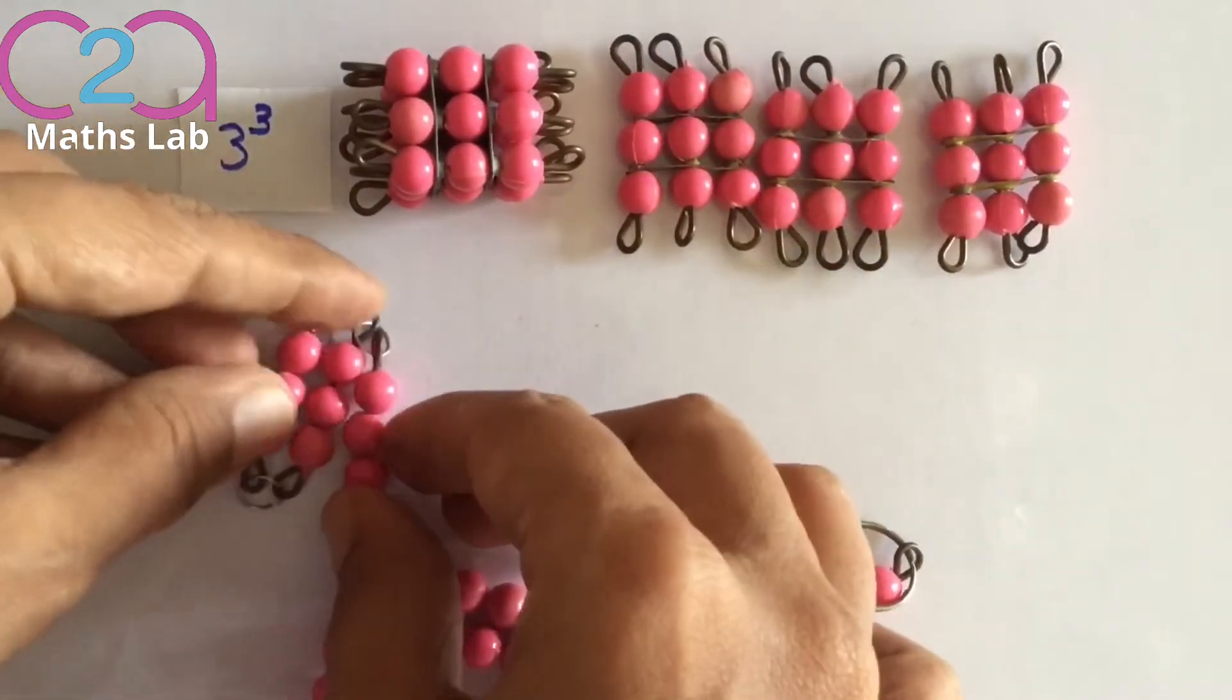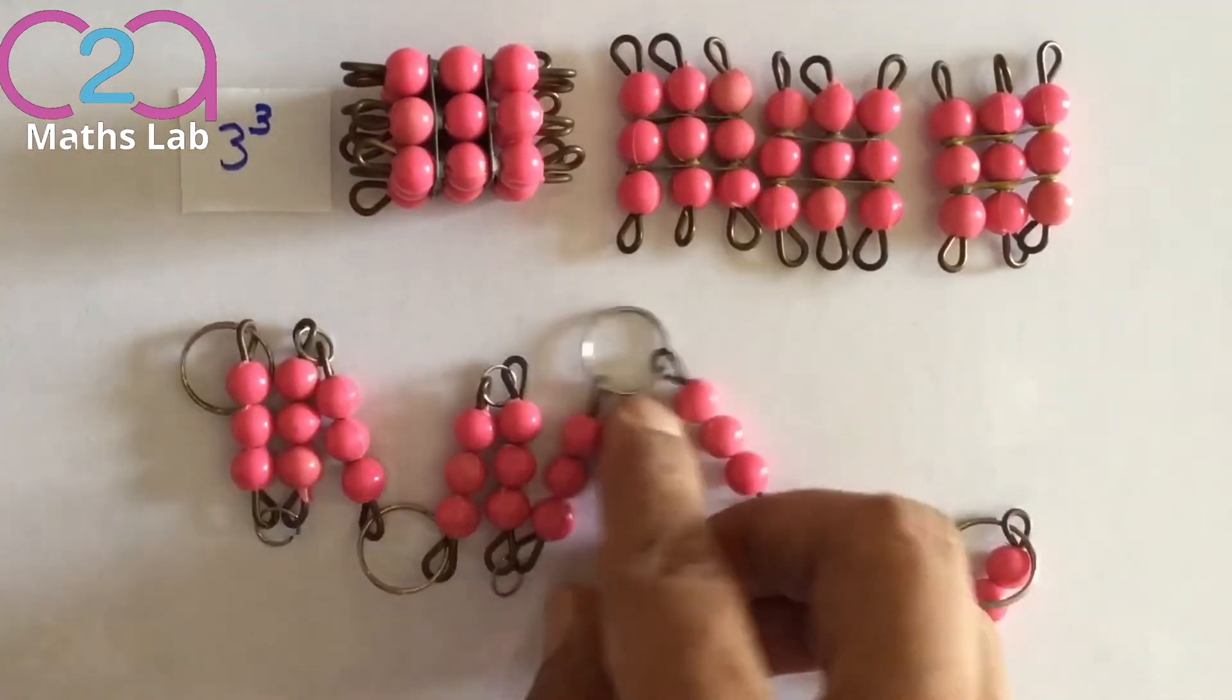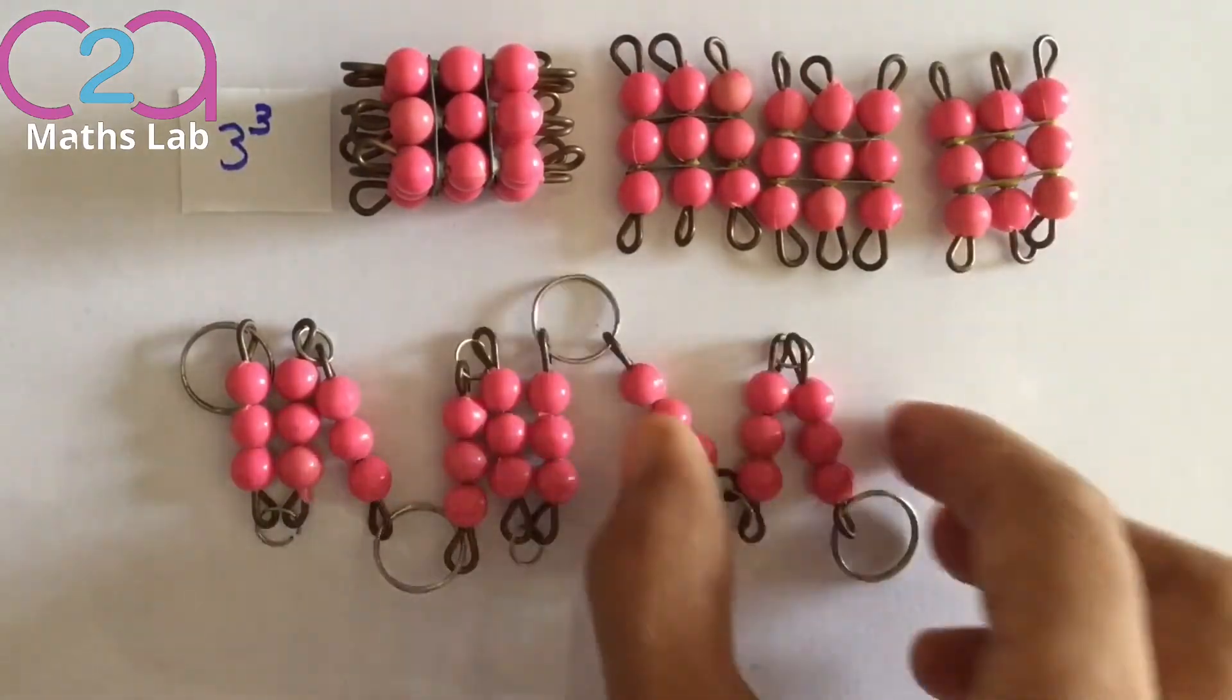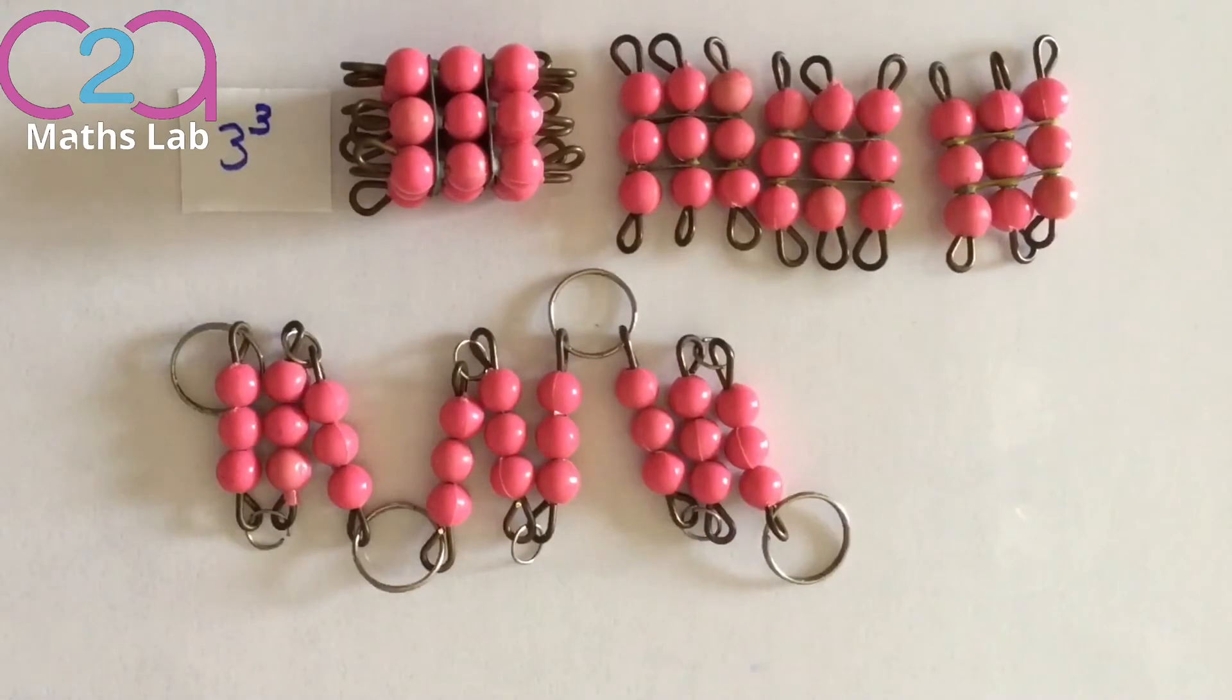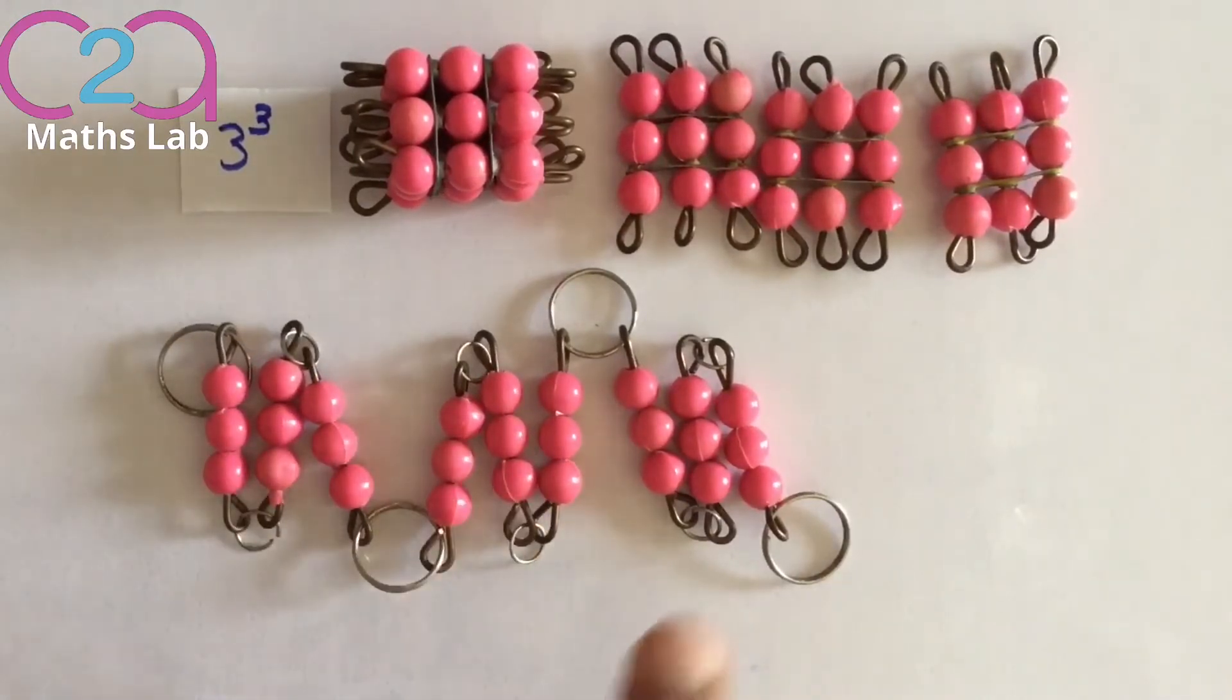Let's count the number of beads in this chain. This is the first square. This is the second square. And this is the third square. So in a square of 3, there are 9 beads. So 9 plus 9 plus 9.